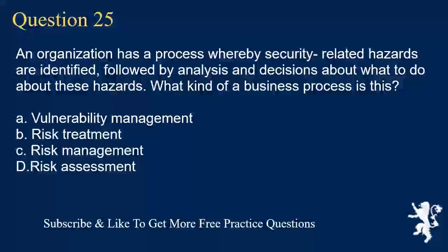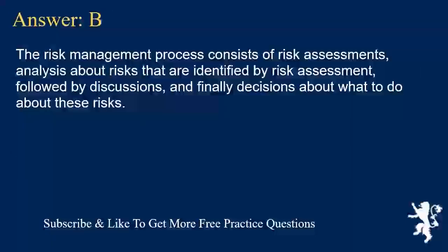Question 25. An organization has a process whereby security-related hazards are identified, followed by analysis and decisions about what to do about these hazards. What kind of a business process is this? A. Vulnerability management. B. Risk treatment. C. Risk management. D. Risk assessment. Answer B. The risk management process consists of risk assessments, analysis about risks that are identified by risk assessment, followed by discussions, and finally decisions about what to do about these risks.